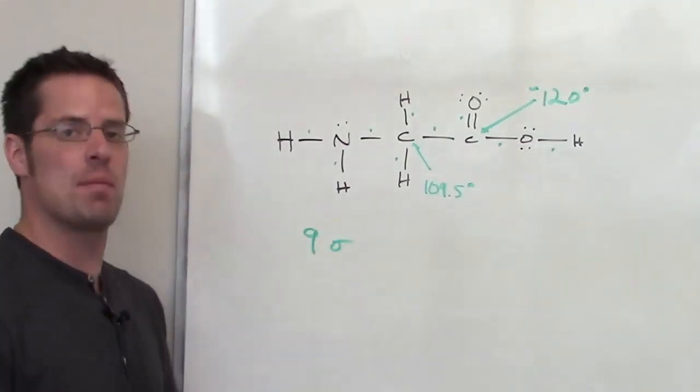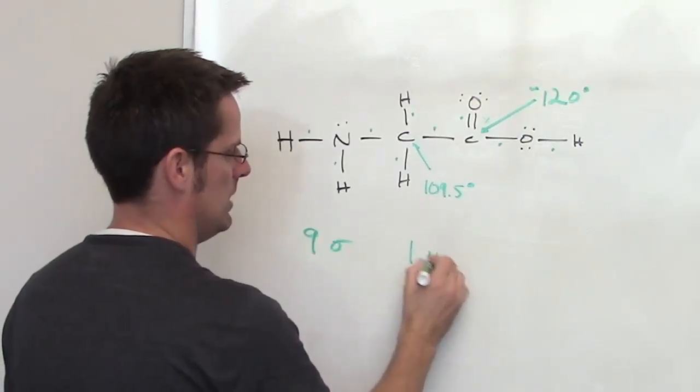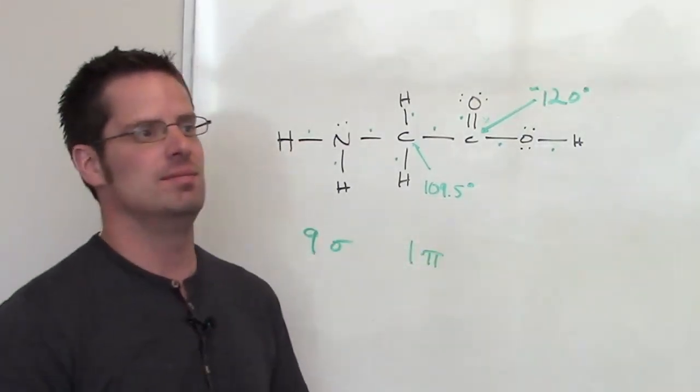It asks me then how many pi bonds there are. I've got one pi. So I'll go ahead and write down one pi.